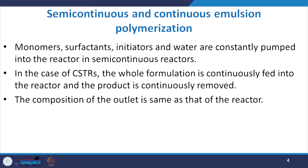Let us start with semi-continuous and continuous emulsion polymerization. The integral parts of emulsion polymerization are monomers, surfactant, initiators, and water. All these are constantly pumped into the reactor in the semi-continuous reactor. Every ingredient plays a vital role: surfactants change the surface energy, initiators trigger the polymerization reaction, and water is the dispersion media.